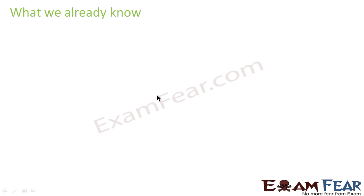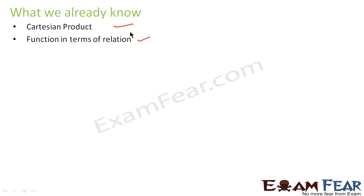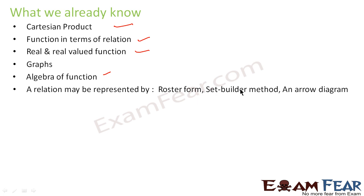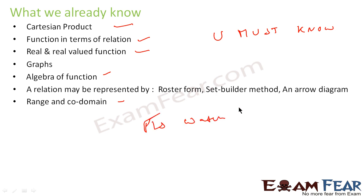Before going ahead with relations and functions, let's recap what we already know from class 11. I assume you already know what Cartesian product is, what functions are in terms of relations, real-valued functions, algebra of functions, how to represent a relation using roster form, set-builder form, and arrow diagrams, as well as domain, range, and codomain. If you don't know these things, please watch examfear's class 11 math videos.